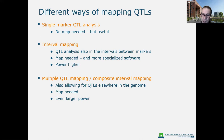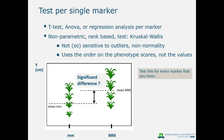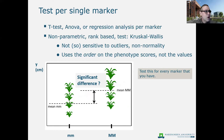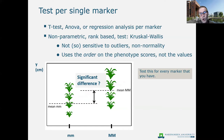The single marker test could, in its most simple form, be a t-test, an ANOVA, or a regression analysis per single marker. It could also be a non-parametric test based on the ranks of the phenotype, like Kruskal-Wallis, which is not so sensitive to outliers and to assumptions such as normality. There you would use only the order of the phenotypic scores. We group the phenotypic trait according to marker genotype and look for a significant difference between the groups.